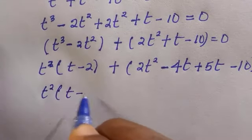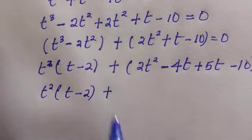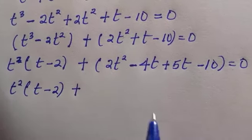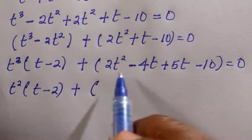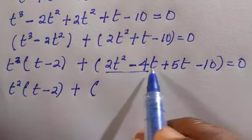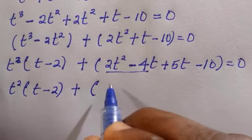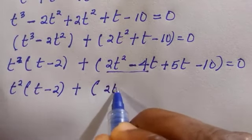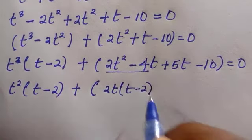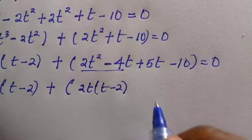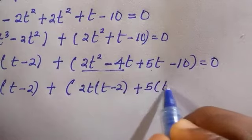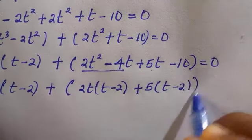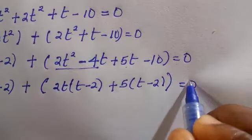So for this we have t squared bracket t minus 2 plus, then we can separate this thing as well. What is common in the first two here is 2t. By taking out 2t we have bracket t minus 2 plus, the second one which is 5 is common, we are left with t minus 2 as well then larger bracket equals 0.